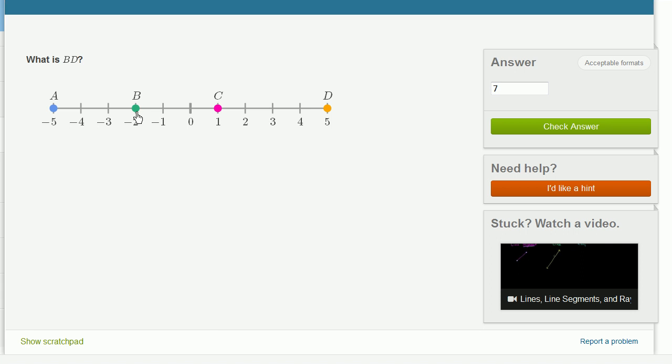Or you could say, look, I got to go 2 to the right just to get to 0, and I got to go 5 more to the right to get to D. So that's going to be 7.